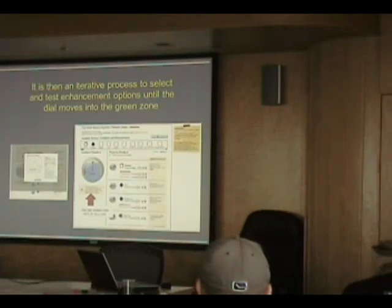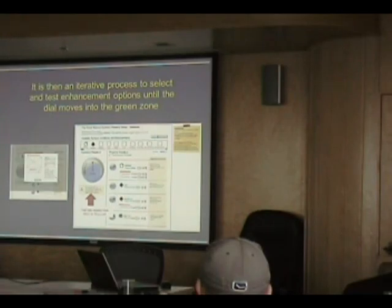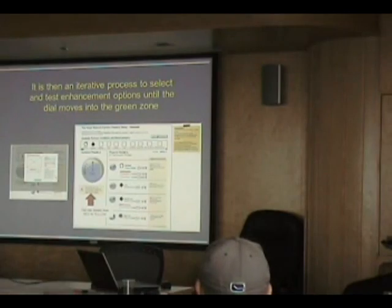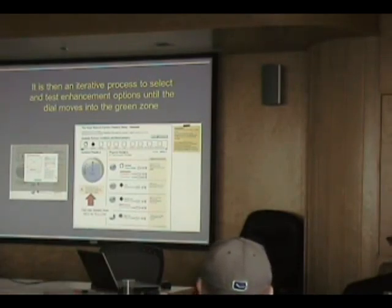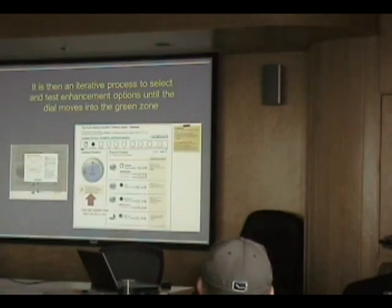The homeowner chooses to modify his driveway. He's added an enhancement to the front driveway condition. When establishing the base conditions, the other enhancements were grayed out. Once you've established and saved your baseline condition, you're now able to play around with and add these enhancements. Here, they've added an enhancement of new pervious pavers to replace their driveway.